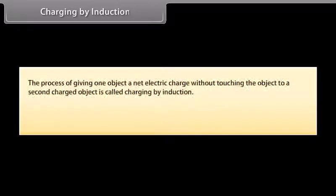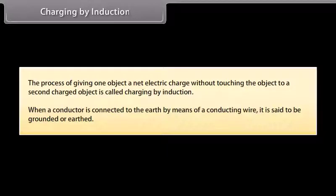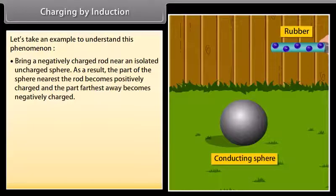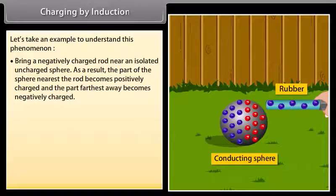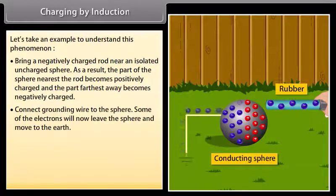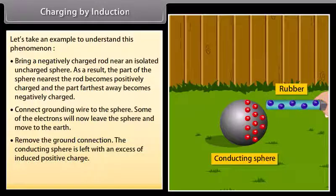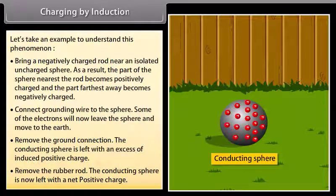Charging by induction: The process of giving one object a net electric charge without touching the object to a second charged object is called charging by induction. When a conductor is connected to the earth by means of a conducting wire, it is said to be grounded or earthed. For example, bring a negatively charged rod near an isolated uncharged sphere — the part nearest the rod becomes positively charged and the part farthest away becomes negatively charged. Connect a grounding wire to the sphere; some electrons will leave the sphere and move to the earth. Remove the ground connection and then the rod — the conducting sphere is left with a net positive charge.